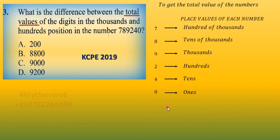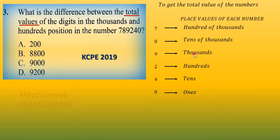When you do that, you go back to the question. What is the difference? That is the main question — the total values of the digits in thousands and hundreds. You go back to your numbers and you locate where thousands is and where hundreds is.